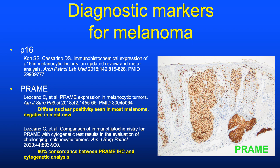PRAME stands for Preferentially Expressed Antigen in Melanoma. With PRAME, nevi are negative but most melanomas show diffuse nuclear positivity—the exception being desmoplastic melanoma, where it is not as sensitive. These markers will be discussed in greater detail in the melanocytic lecture.